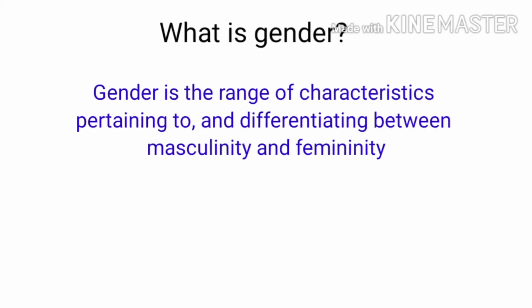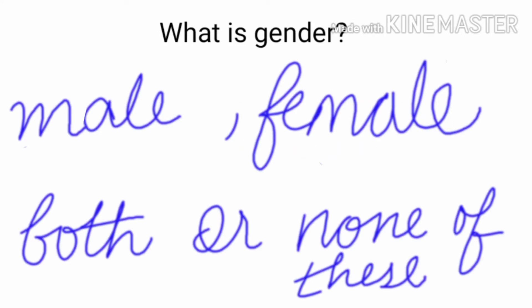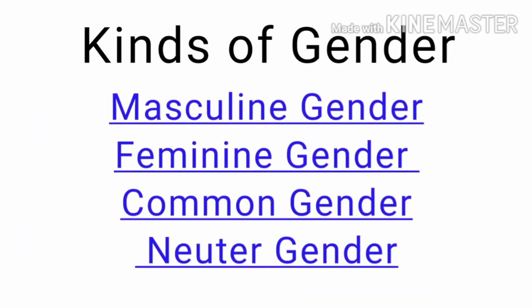So, in the English language, noun words belong to different groups — some words refer to males, some words refer to females, some refer to males and females, and some refer to neither males nor females. So, these nouns are categorized in four genders. One by one we will see what are the different kinds of gender.